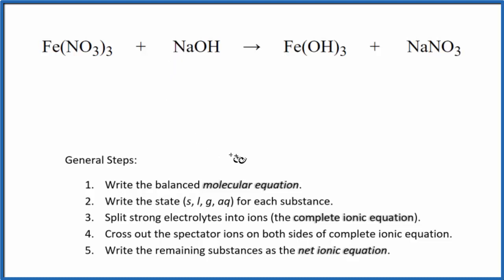When we do net ionic equations, the first thing we need to do is balance the molecular equation. This is the molecular equation. So I can see I have three nitrate ions here and only one over here. So I'm going to put a 3 as my coefficient.